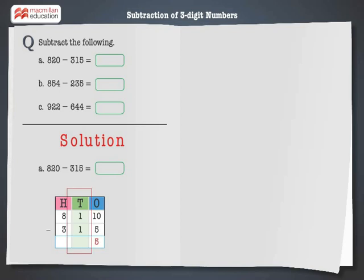Now subtract the 10s: 1 minus 1 is equal to 0 tens. Finally, subtract the 100s: 8 minus 3 is equal to 5 hundreds. Hence, 820 minus 315 is equal to 505. Let's solve the next problem.